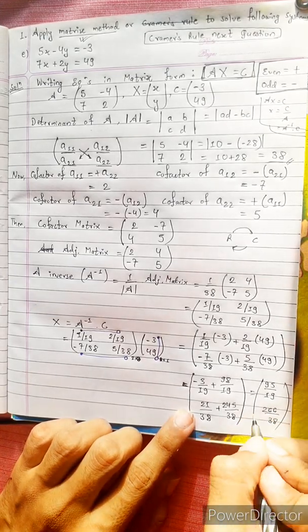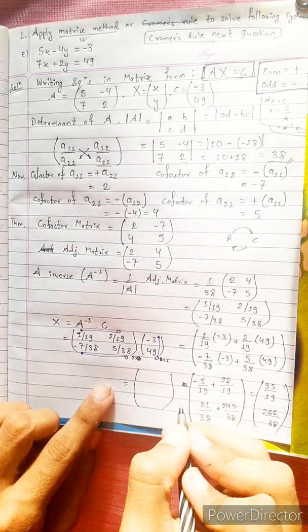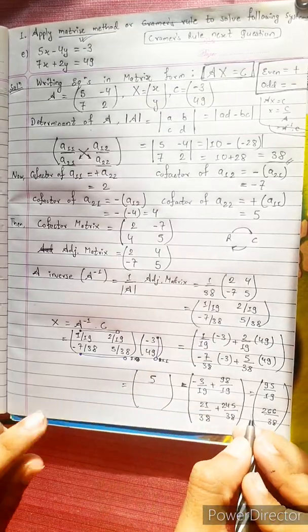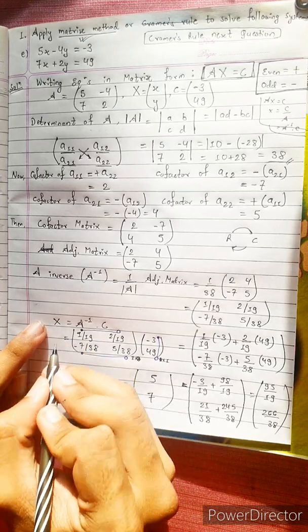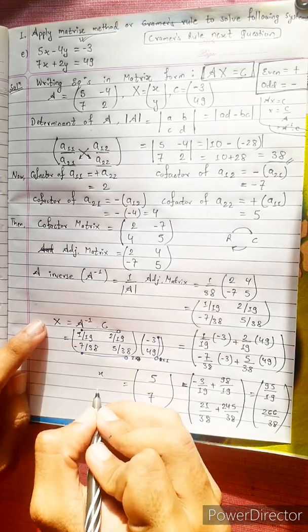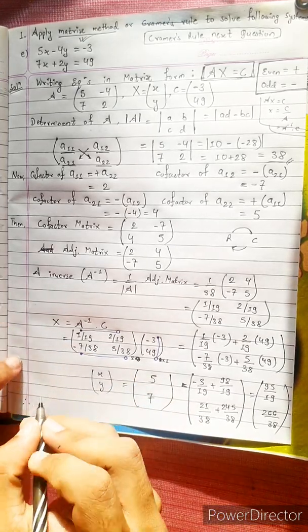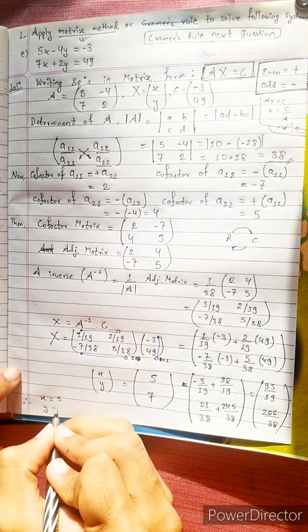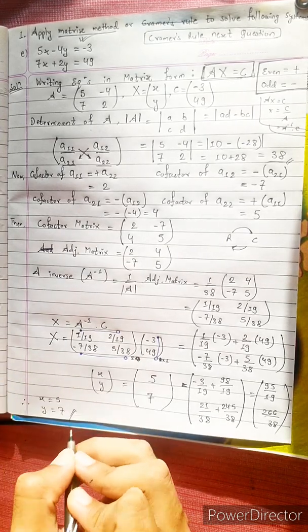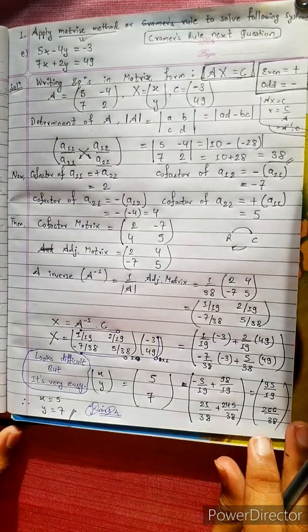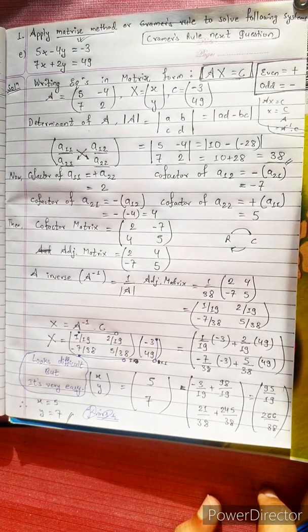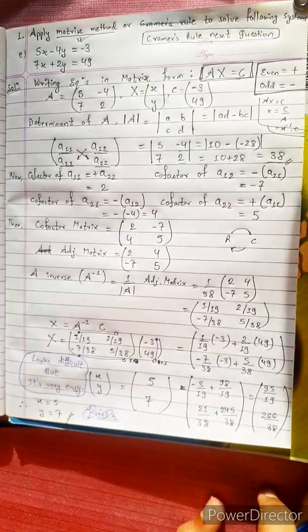Therefore, x equals 5 and y equals 7. That is the answer. Thank you. Bye-bye.